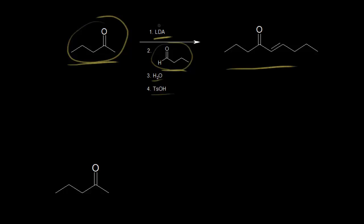We'll first start with the addition of LDA, which is a strong base. The strong base is going to take a proton from our ketone. The alpha carbons are the ones next to the carbonyl — there's one on either side. We saw in a previous video that LDA is going to form the kinetic enolate, taking a proton from the least sterically hindered side — the right side. Taking one from the left would give the thermodynamic enolate.